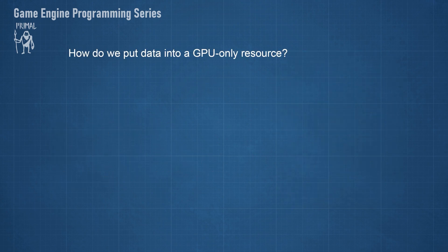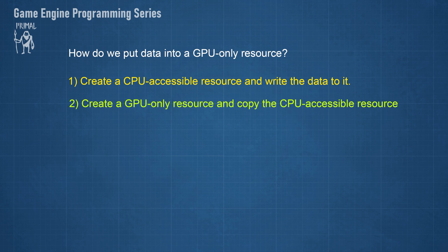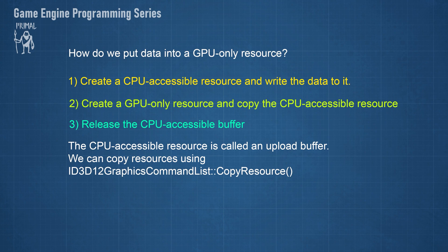But wait — if the GPU-only resources can only be accessed by the GPU, how do we initialize them with any data to begin with? We need to do it in three steps. First, we create a CPU-accessible resource and write the data to it. Then, we create a GPU-only resource and use a command to copy the contents of the first resource into the new one. Finally, we release the first buffer. The CPU-accessible buffer is called the upload buffer because it's used to upload data to the GPU.